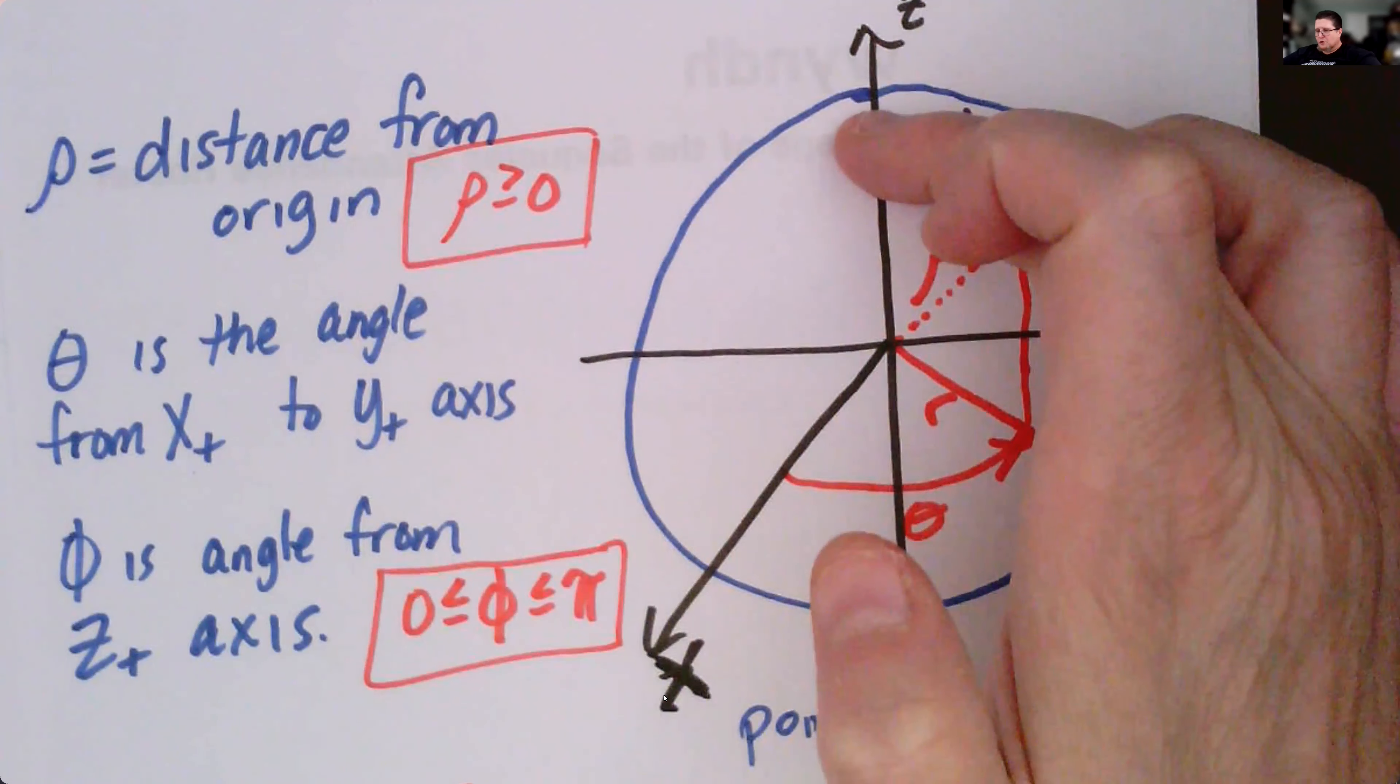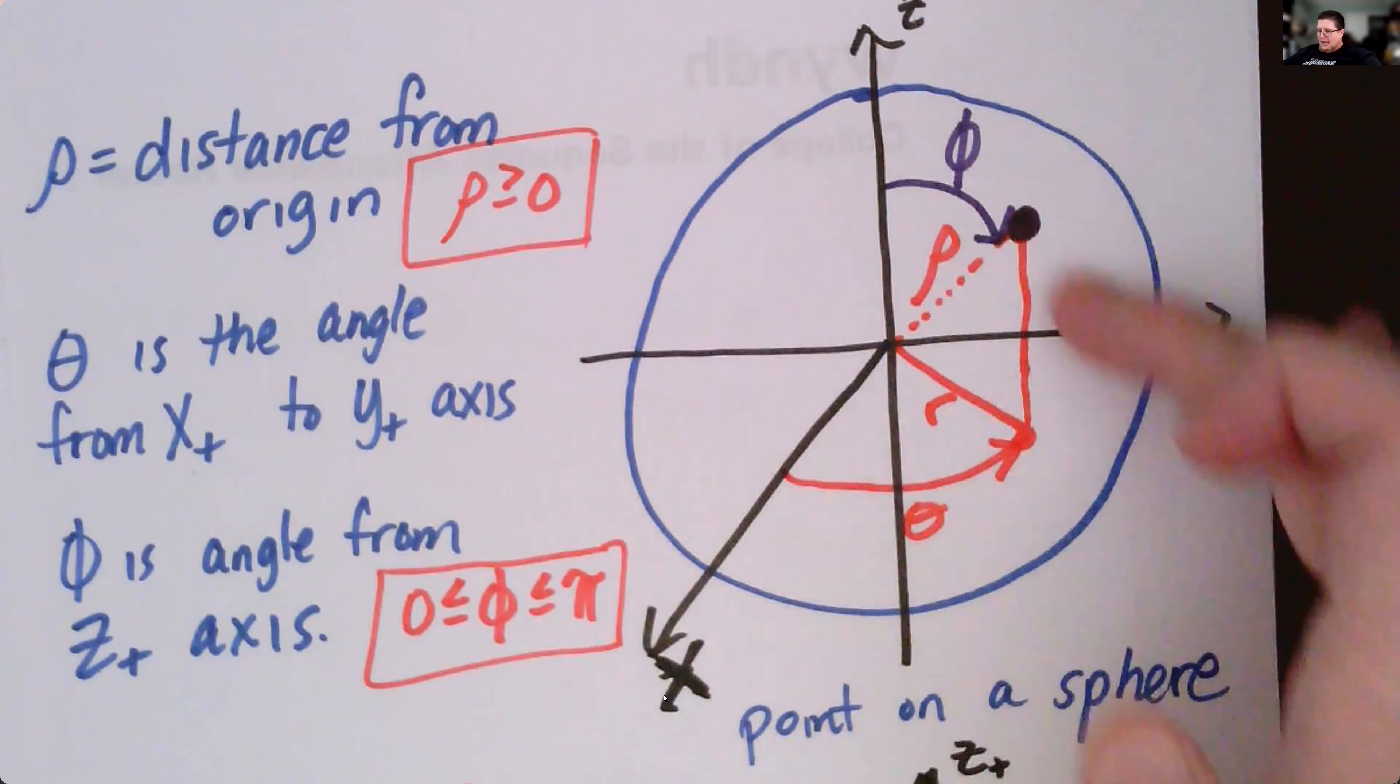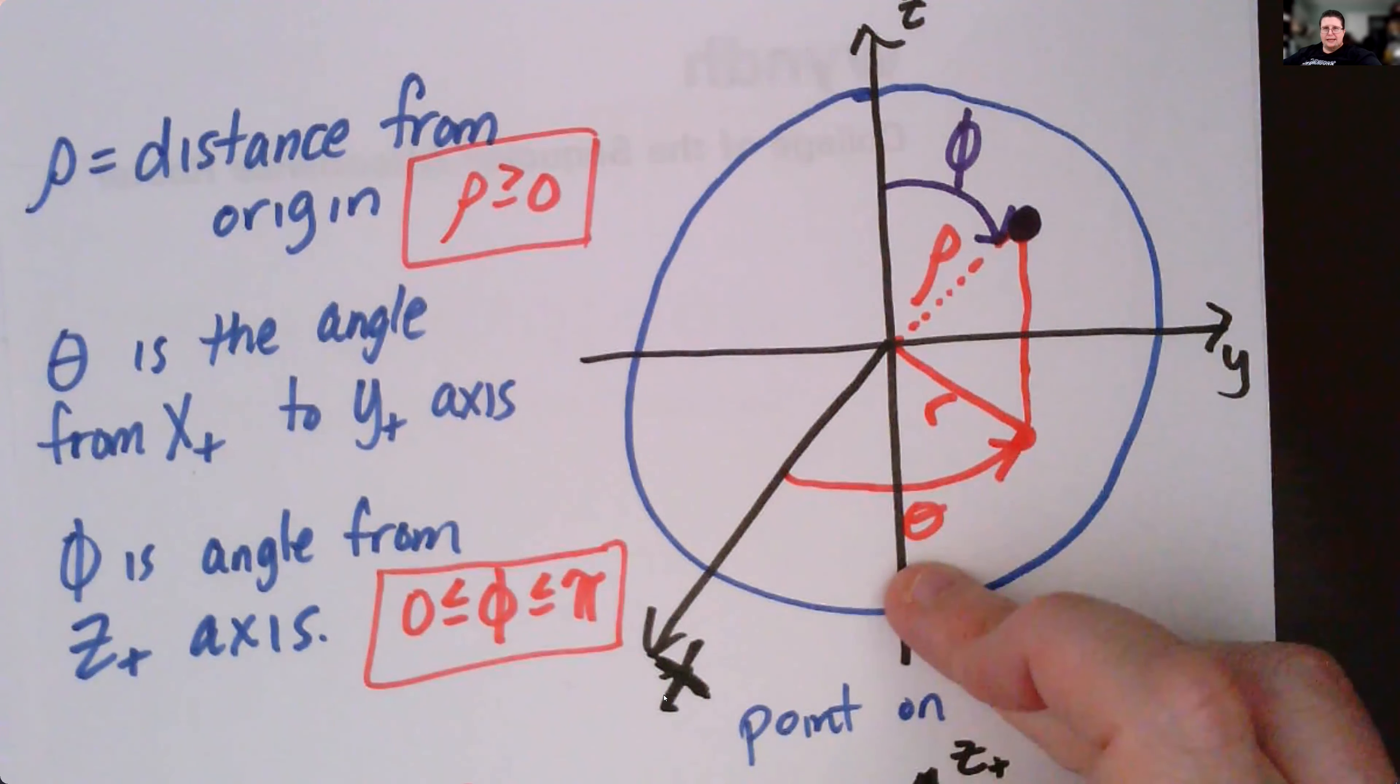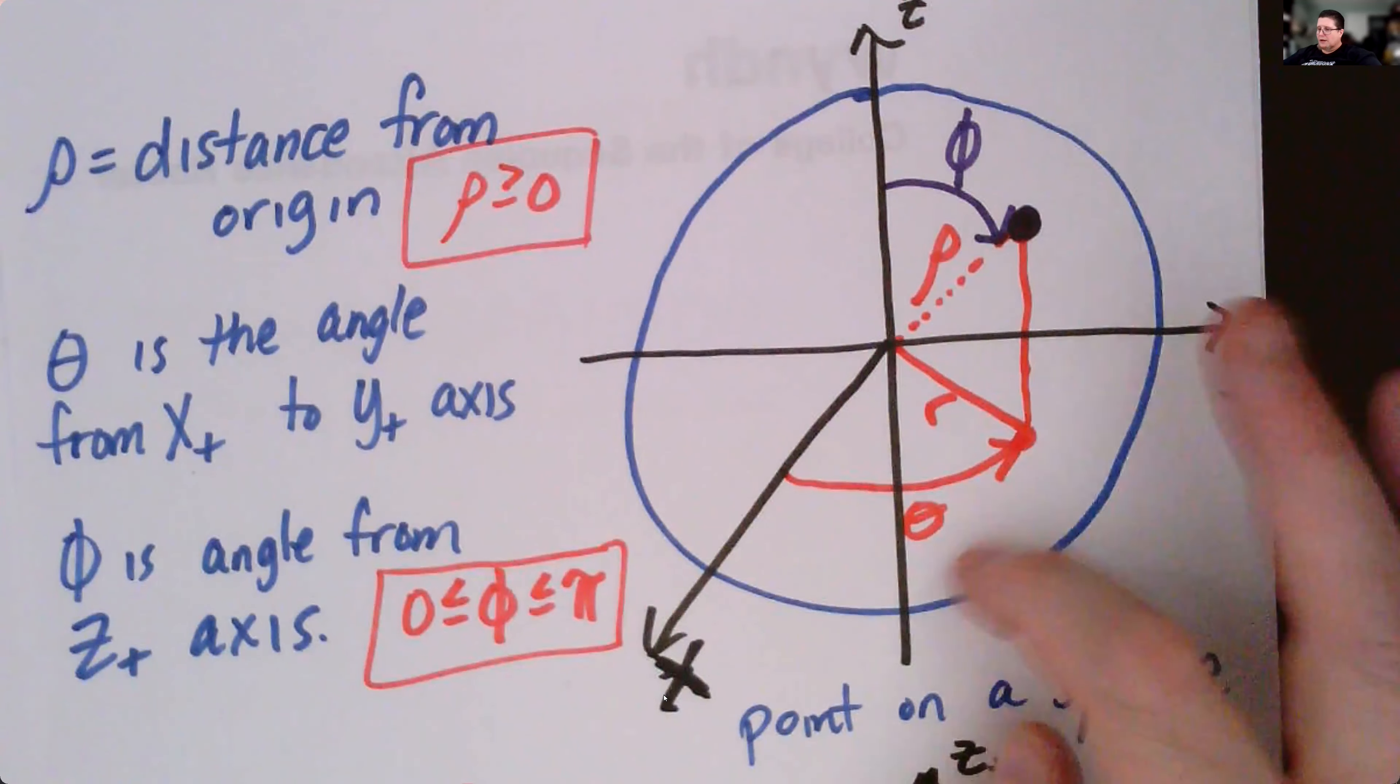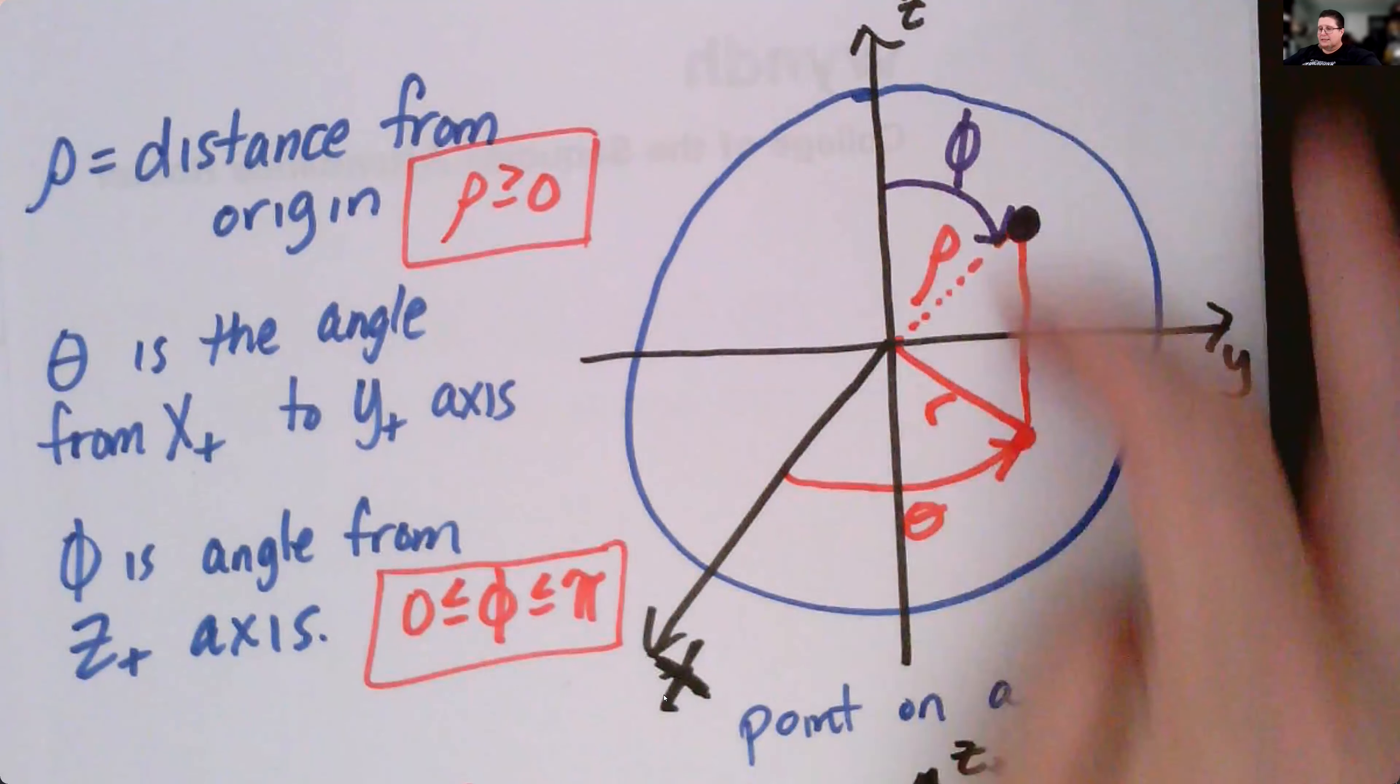The way we get phi is it starts at zero degrees along the positive z-axis and it rotates downward. It maxes out when we get to the negative z-axis for pi radians. So we do have the restrictions where phi has got to be between zero and pi.